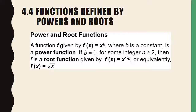A function f given by f of x equals x to the b, where b is a constant, is a power function. If b equals 1 over n for some integer greater than or equal to 2, then f is a root function given by f of x equals x to the 1 over n, or equivalently by f of x equals the nth root of x.